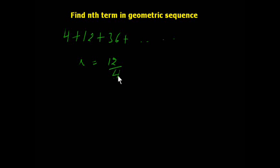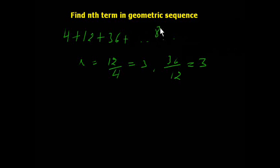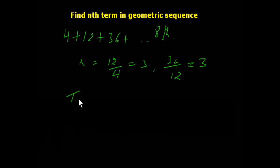And 36 divided by 12 is also 3. So suppose I want to know the 8th term. The formula in the GP series is Tn = a × r^(n-1). In this case, I want to know the 8th term.